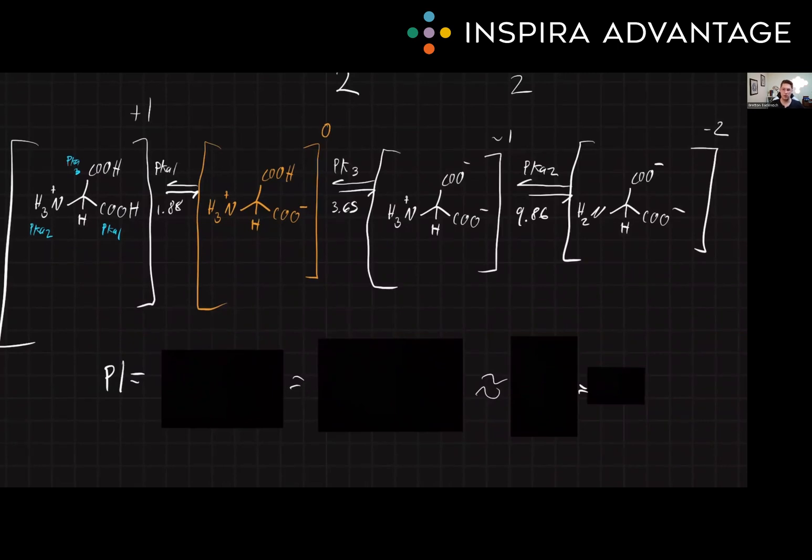The first thing you want to do is draw out all the protonated forms like I did here. Then we will want to find one with the net charge of being zero. I've highlighted this one in orange. Next, all we need to do is average the two pKa's on either side of it. In this case, that's 1.88 and 3.65.